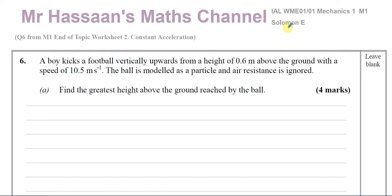This question would also be quite relevant to Cambridge M1, although the only difference would be the value of G used — in Cambridge it's 10 and in Edexcel it's 9.8. Now, a boy kicks a football vertically upwards from a height of 0.6 meters above the ground with a speed of 10.5 meters per second. The ball is modeled as a particle and air resistance is ignored. Find the greatest height above the ground reached by the ball.